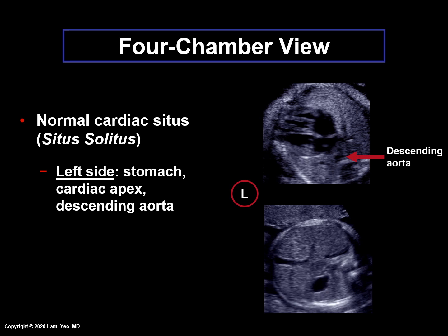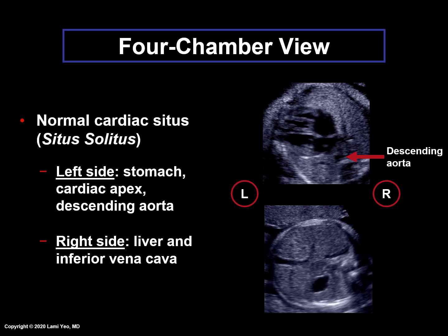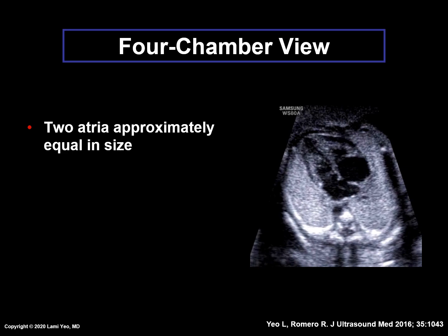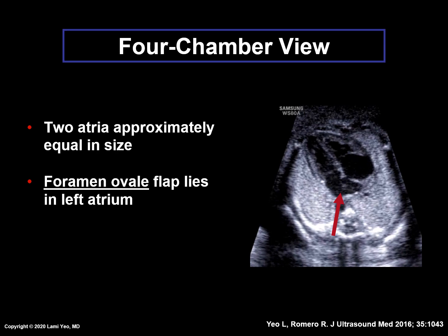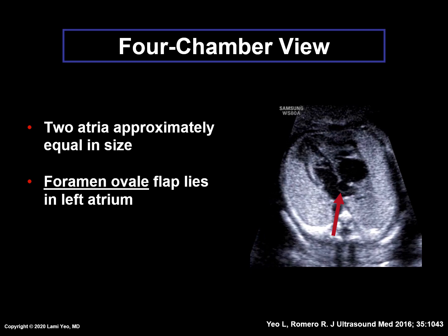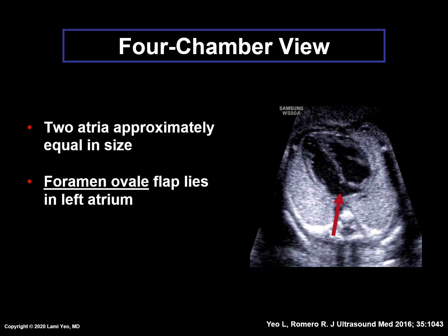Normal cardiac situs is situs solidus. On the fetal left side should be the stomach, cardiac apex, and descending aorta, while on the right side, the liver and inferior vena cava should be visualized. The two atria should be approximately equal in size, and the foramen ovale flap lies in the left atrium. This is because umbilical venous blood, which is the most highly saturated blood in the fetal circulation, preferentially streams towards the left side of the heart through the foramen ovale.